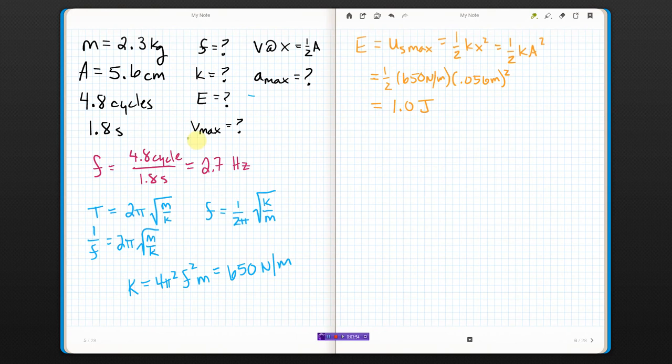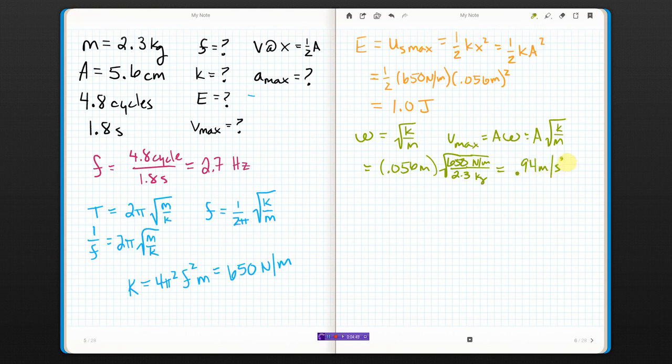Then next up we've got v max. There's two ways you could find this one. You could go back here and find omega, like omega is the root of k over m. And then v max is a times omega, so a times the root of k over m, which would be 0.056. Again, you need to put standard units. Square root 650 over, mass is 2.3 kilograms. This is newtons per meter, this is kilograms. And if you do it that way, you get 0.94 meters per second.